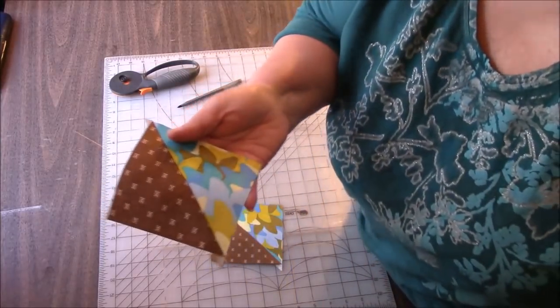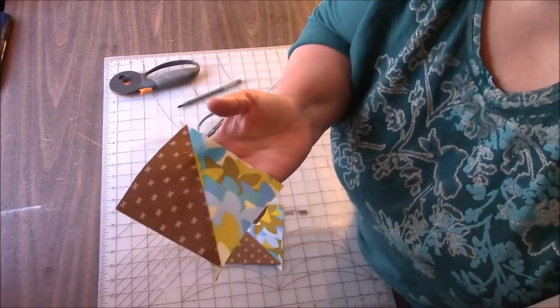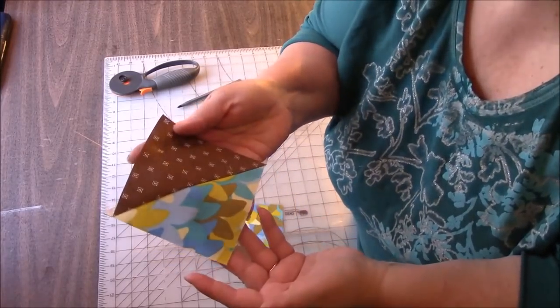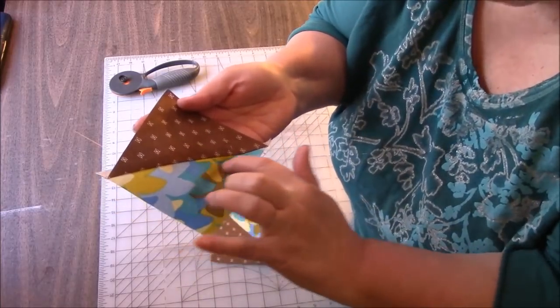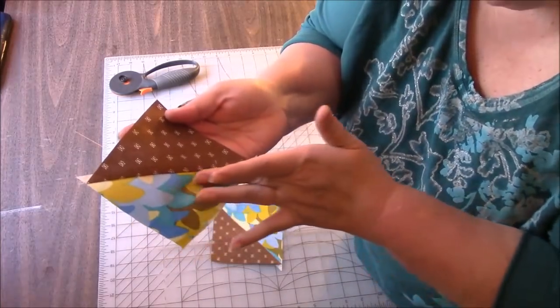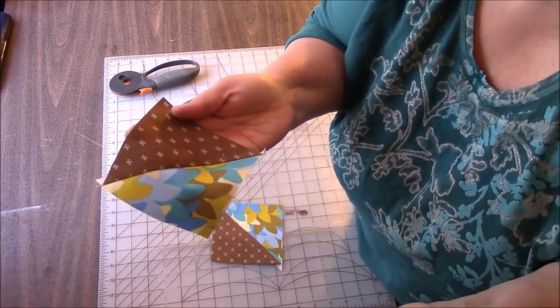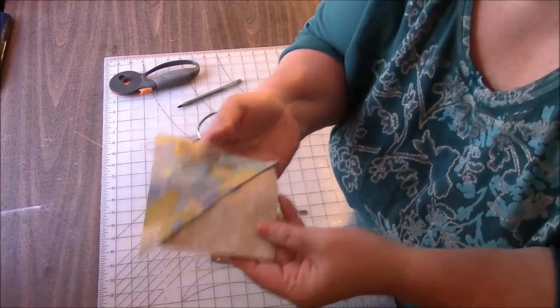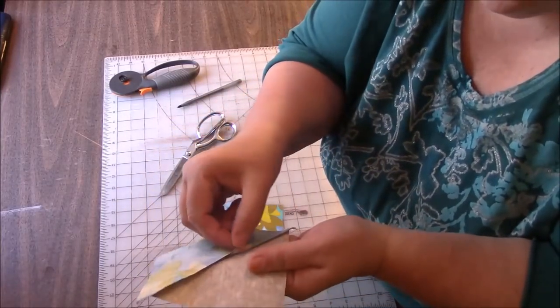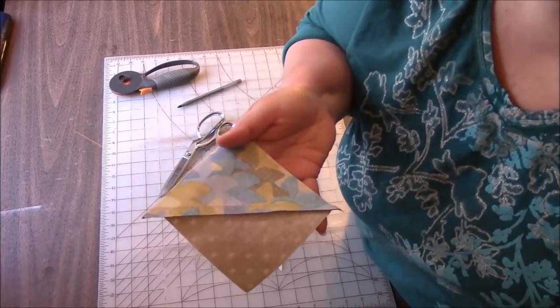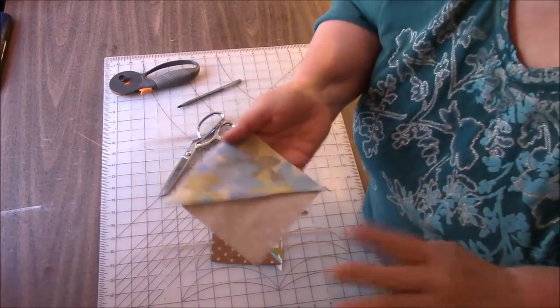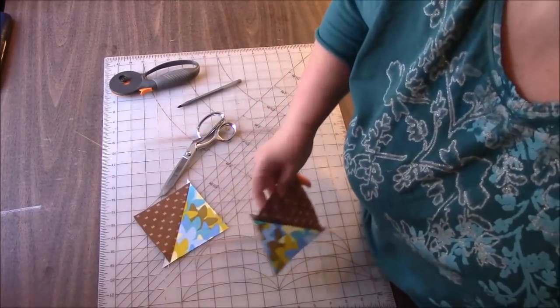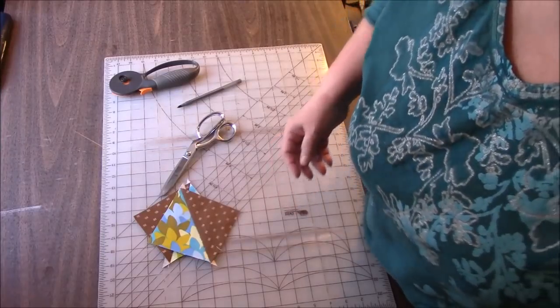And I'm also often asked, which side do we press to? You can press to the dark side if you want. The only reason that is usually suggested is because if you press to the light side, sometimes you can see the seam allowance underneath, especially if you're using white. But again, there's no law. You can press to whatever side you want. The one thing I do not do is I do not open and press. I don't have time for that. So I press to one side always, unless it's absolutely necessary to press open for some weird reason. I haven't come across that reason yet.